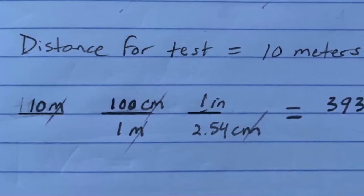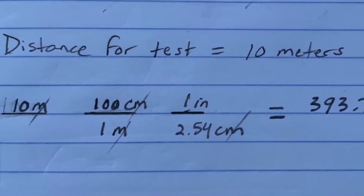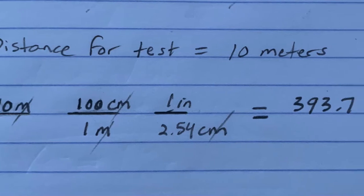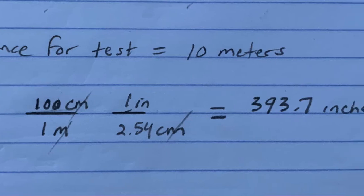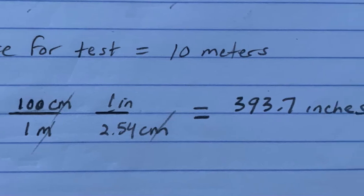The distance for my test would be 10 meters, and since I didn't have a meter stick at home, I needed to use a standard tape measure. I used dimensional analysis, as you can see here, to calculate that 10 meters is equal to 393.7 inches.